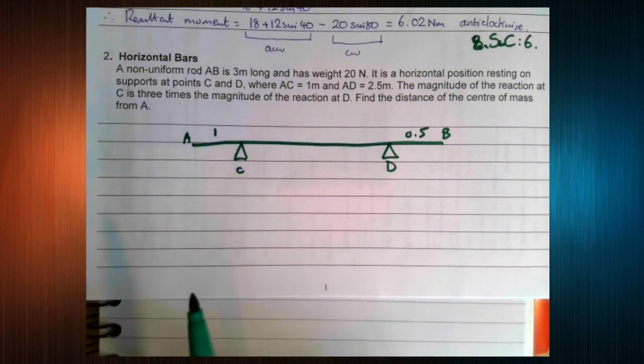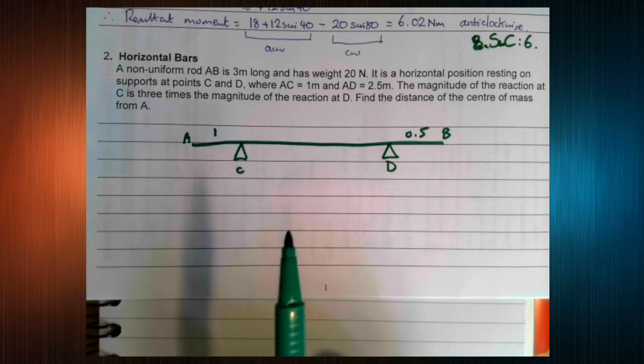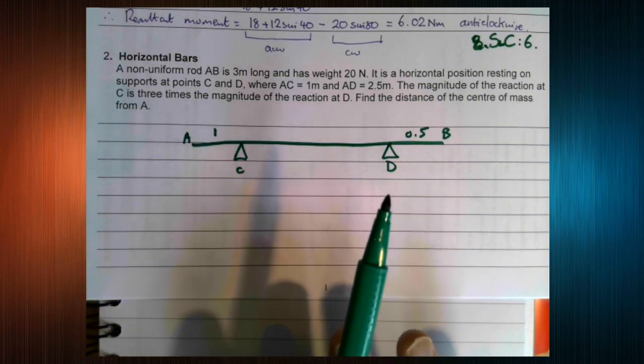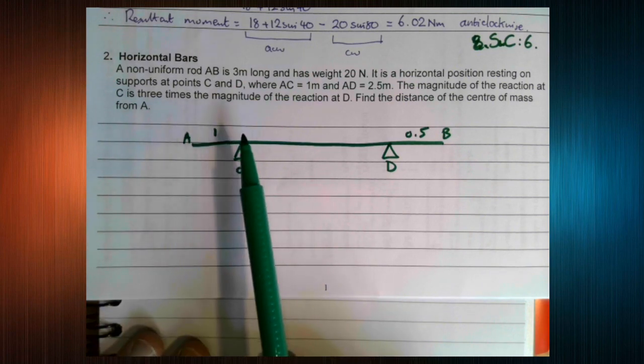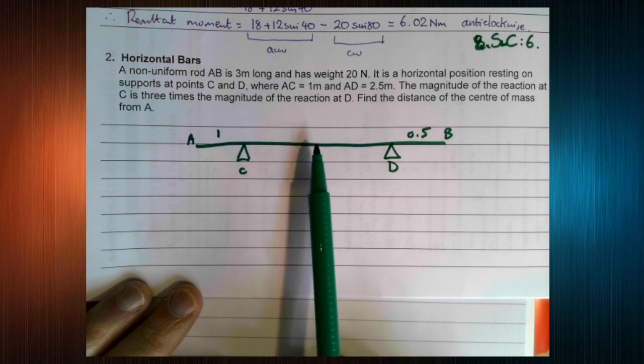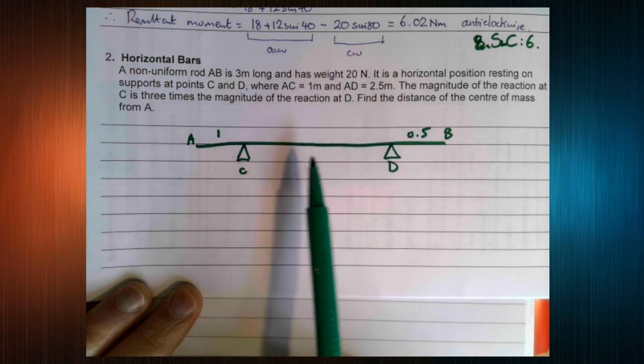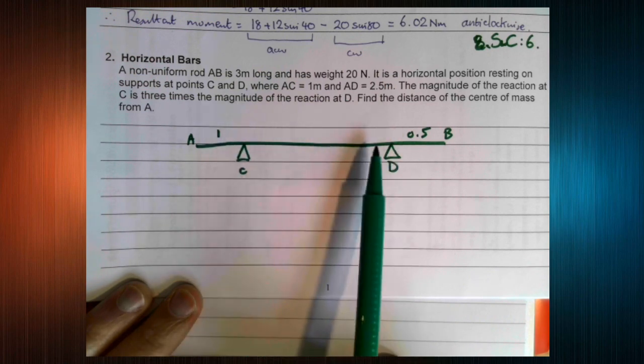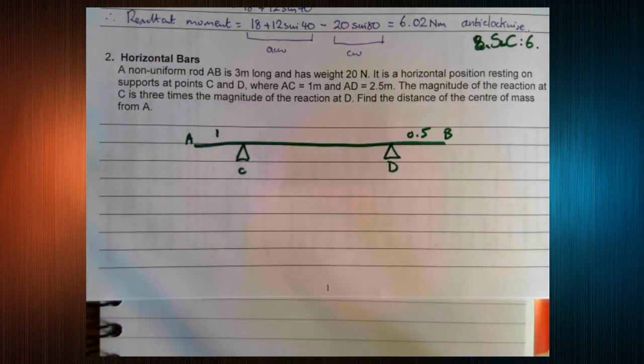The non-uniform rod is three meters long and has weight 20 newtons. So it's not mass 20 kilograms, it's weight 20 newtons, so we don't need to worry about g at all. We know that it's non-uniform, so it's not in the middle.